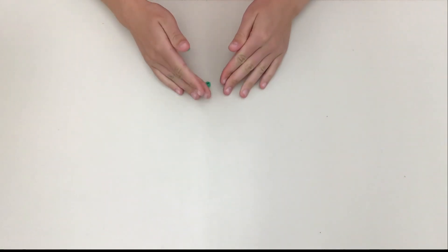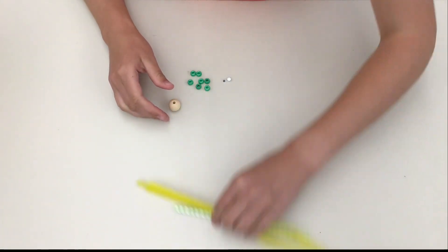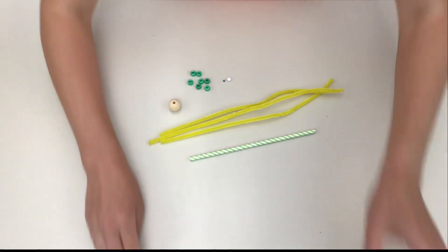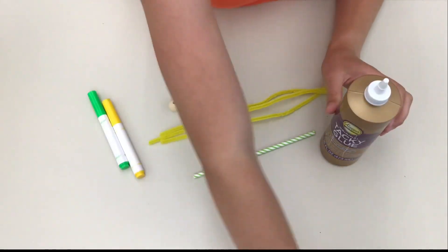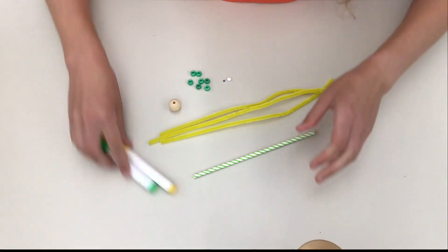For today's craft you're going to need two googly eyes and seven pony beads, as well as a large wooden bead, three pipe cleaners, a straw, markers, tacky glue, scissors, and a piece of felt that I didn't show here.